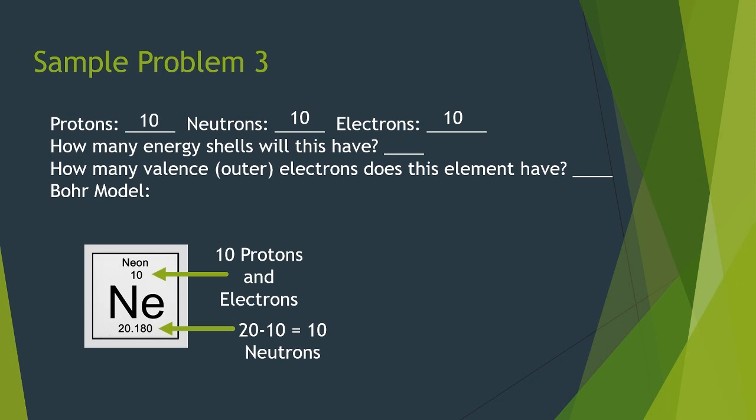So how many shells does this thing have? Well, the first shell holds two. The second shell can hold eight. I've got 10. Two plus eight is 10. So it's going to still be two energy shells. The model started out with the nucleus. Ten protons, ten neutrons in the nucleus. I draw my first energy ring. First shell has two electrons, of course, in it. That second shell can hold up to eight. And I fit all eight in it, because that's the max. And that is my 10 electrons all put into place. That means that the valent shell for a neon atom has an eight.